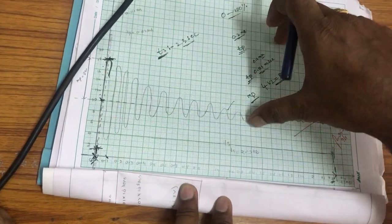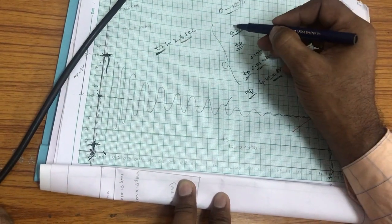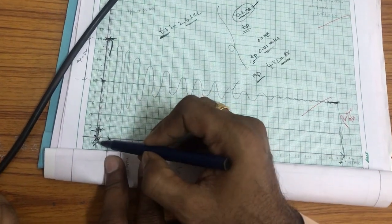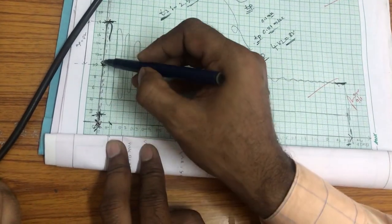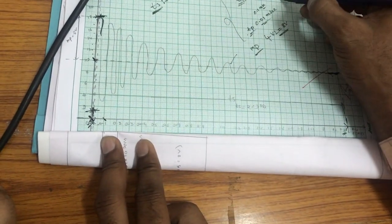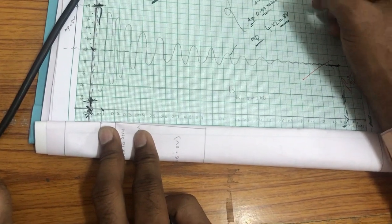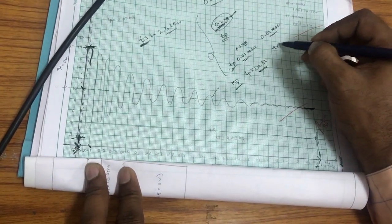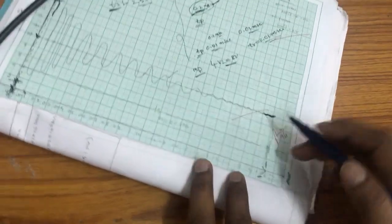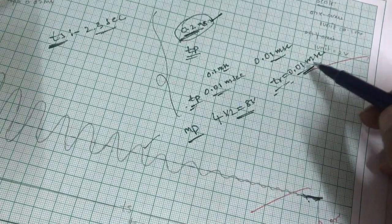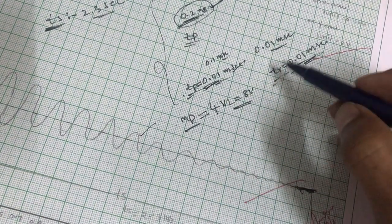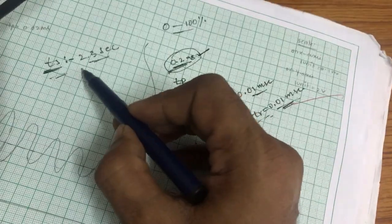These are the calculations for finding the time domain specifications. Correcting the rise time: it is the time required to go from 0 to 100%, and from the graph we get nearly 0.01 milliseconds — not 0.2 milliseconds. So rise time TR = 0.01 ms, peak time is also nearly 0.01 ms, maximum peak overshoot is 8 volts, and settling time is 2.3 ms.